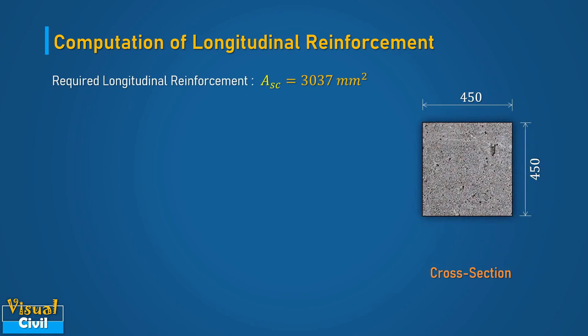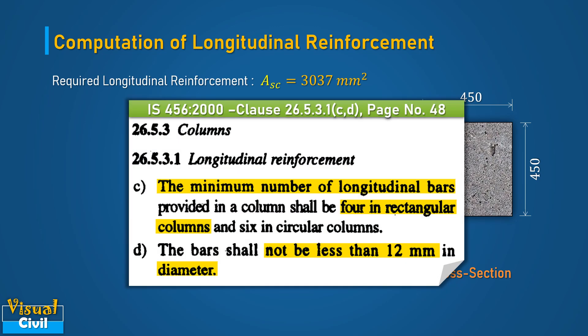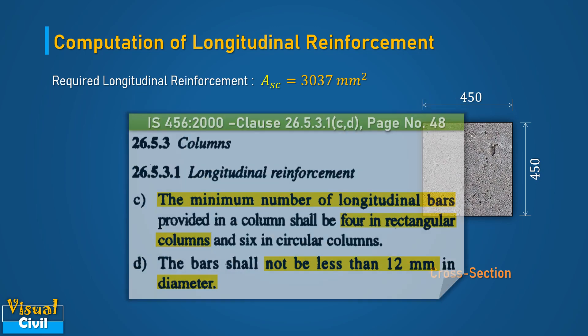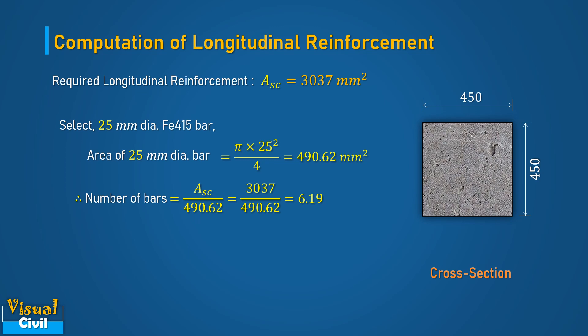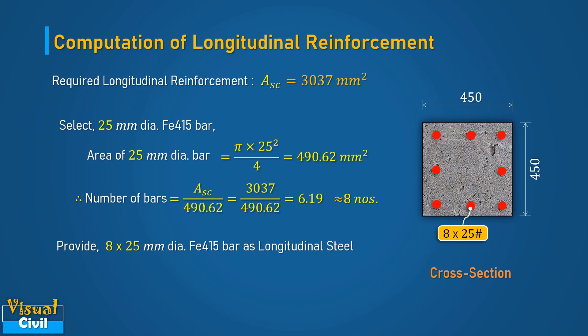Let us fix the number of bars to be provided as longitudinal reinforcement. As per clause 26.5.3.1 C and D, the minimum number of bars in a rectangular column are 4 numbers, while the minimum diameter of bar is 12 mm. Select the bar diameter as 25 mm. The cross-sectional area of this bar is 490.62 mm². Compute the number of bars by dividing the required area of steel by cross-sectional area of each bar. In a column, always provide an even number of longitudinal bars. Hence, provide 8 numbers of 25 mm dia bars as longitudinal reinforcement. Thus, the total area of steel provided is equal to 3924 mm².